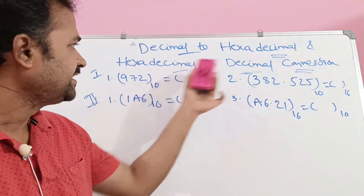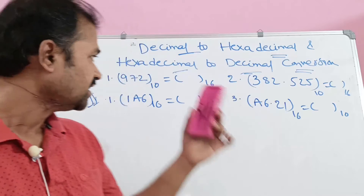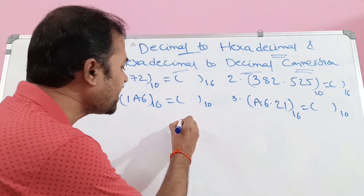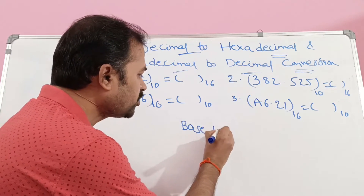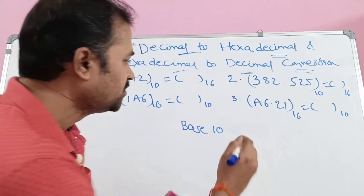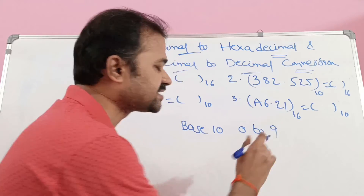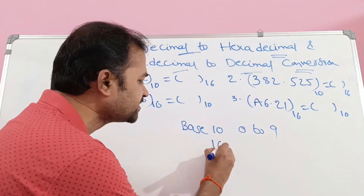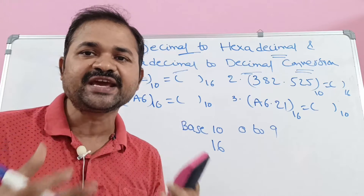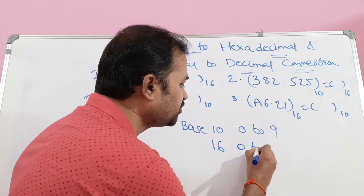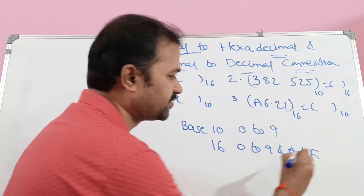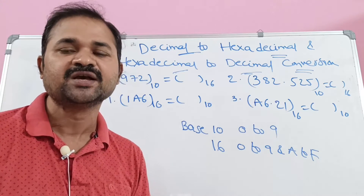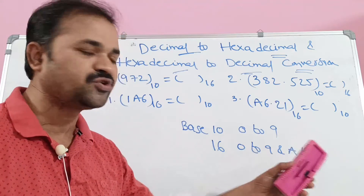Let us discuss decimal to hexadecimal conversion as well as hexadecimal to decimal conversion. Decimal means base value is 10, so a decimal number contains 10 symbols from 0 to 9. Hexadecimal means base value is 16, so we can use 16 symbols from 0 to 9 and A to F. A means 10, B means 11, C means 12, D means 13, E means 14, F means 15.